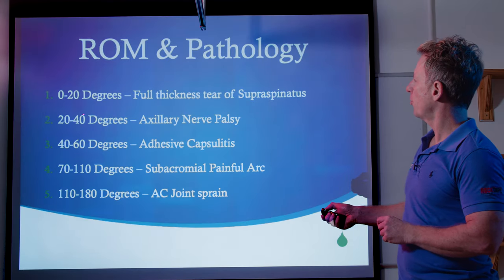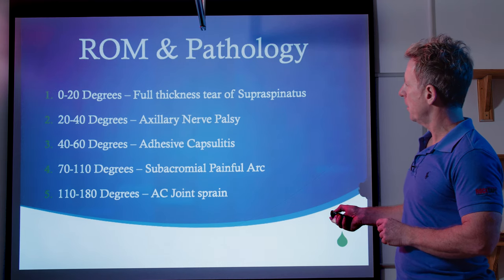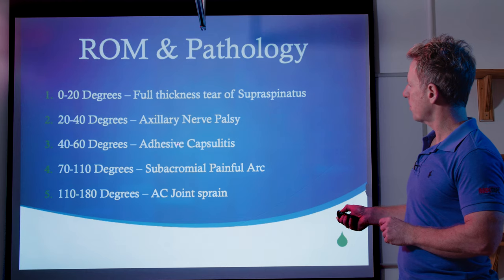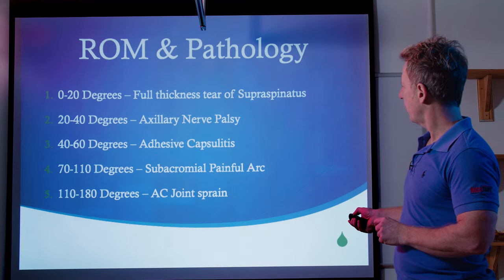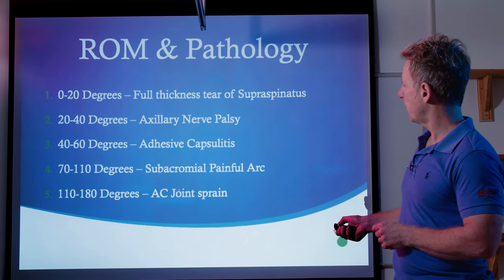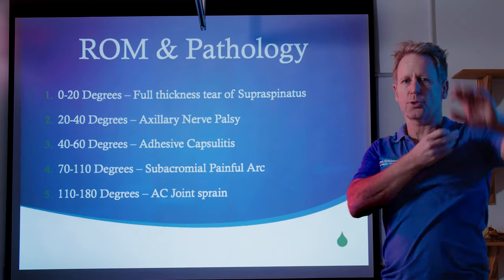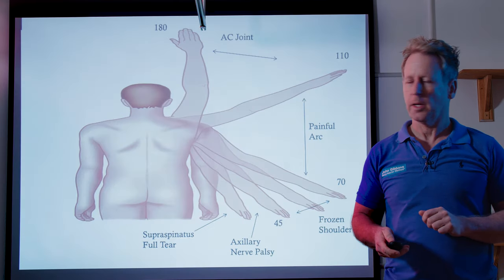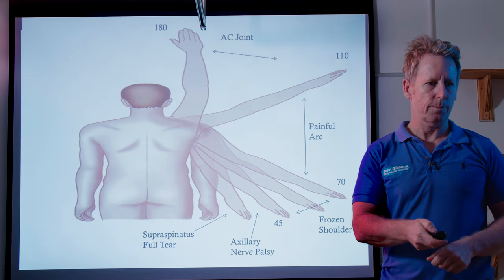So to summarise: 0 to 20 degrees — full thickness tear of supraspinatus, inability to abduct; axillary nerve palsy at different degrees; adhesive capsulitis; 70 to 110 degrees — subacromial pain from the supraspinatus or the bursa. Pain after that could be AC joint, but it could also be supraspinatus impingement toward the end. So sometimes it's not easy to work out what's going on.